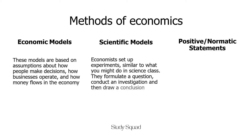The second method of economics is the scientific method. In this method, economists set up experiments similar to what you might do in science class. They formulate a question, conduct an investigation, and then draw a conclusion. For example, they can formulate a question such as: Do students buy cold drink at the tuck shop in term 1 more than in term 2? They will then conduct an investigation by looking at the tuck shop sales to see how many cold drinks were sold in term 1 and in term 2. With this information, they can draw a conclusion as to whether students buy more or less in term 1.